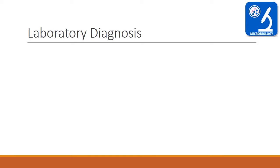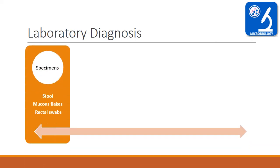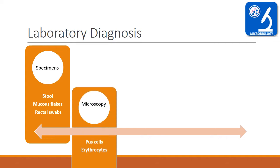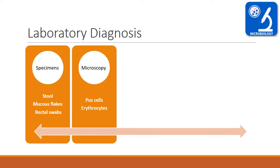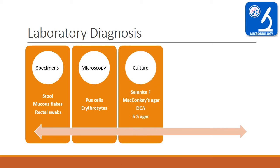Laboratory diagnosis of Shigella. First, specimen collection: we can collect stool, mucous flecks, and rectal swabs. Then microscopy: you can do a wet mount preparation of stool where you can observe pus cells and erythrocytes. For culture, you can use selenite F broth as transport medium, and MacConkey agar, DCA agar, and SS agar for isolation. DCA means deoxycholate citrate agar, and SS means Shigella Salmonella agar.